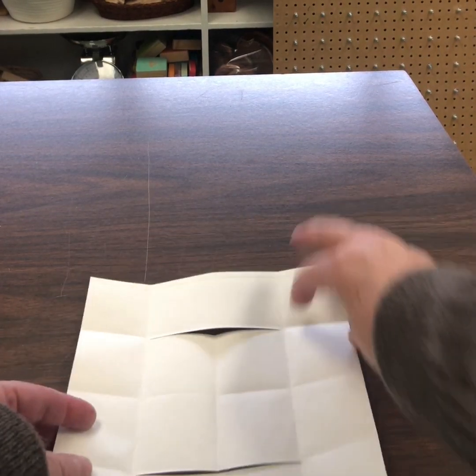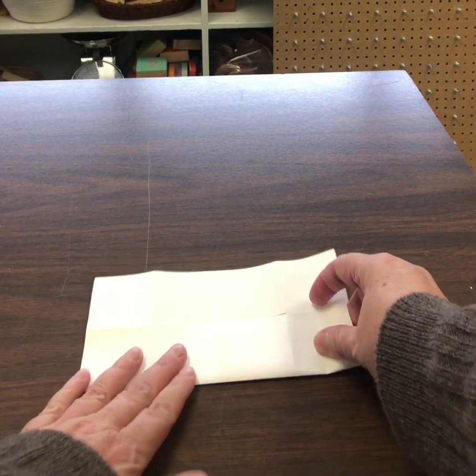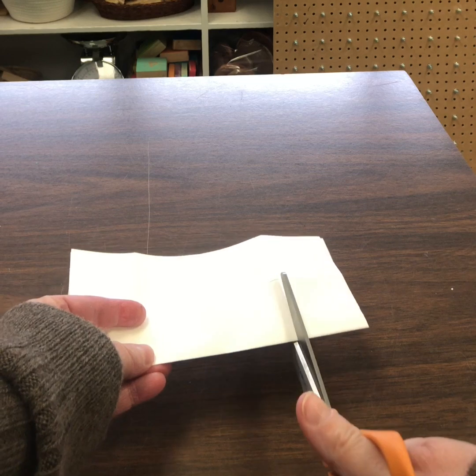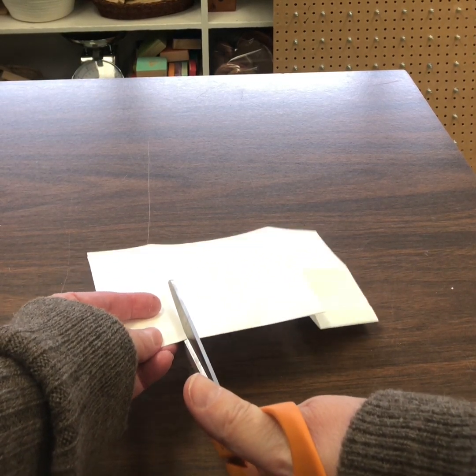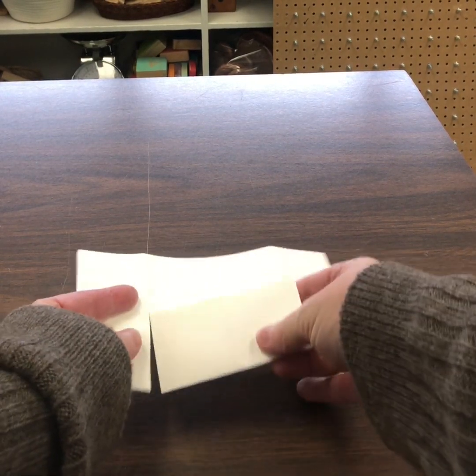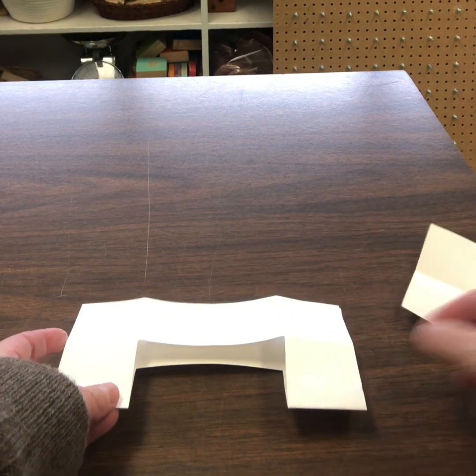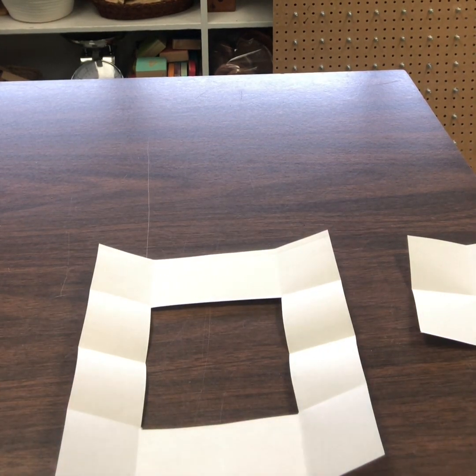Alright, now we're going to turn it, rotate it again and do the same thing. Fold up from the bottom and then cut up one side of the square and then the same thing on this side. And this piece will come out and it's two by two square, four squares, and then we have our frame. And then I'll show you how to fold this frame.